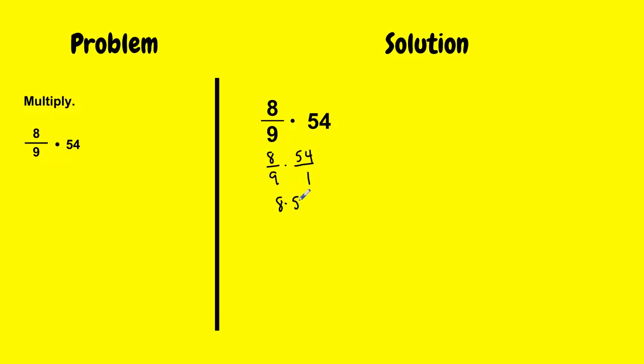So it's going to be 8 times 54 all over 9 times 1. And what I'm doing now is I simplify the fraction by looking at the numbers 8 and 9, which I cannot simplify. 8 and 1 I can't simplify, but 54 over 9 I could simplify that. And I know 9 goes into itself once. It goes into 54 six times.